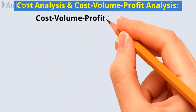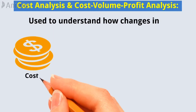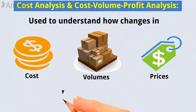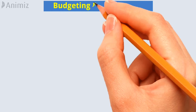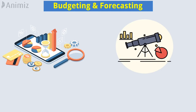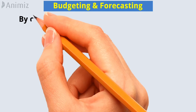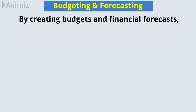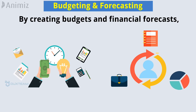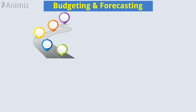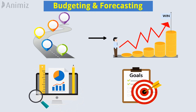Cost-Volume Profit, or CVP Analysis, is a powerful tool used to understand how changes in costs, volumes, and prices impact profitability. Number 2: Budgeting and Forecasting. Budgeting and forecasting are essential components of managerial accounting. By creating budgets and financial forecasts, managerial accountants enable managers to plan and allocate resources effectively. These tools provide a roadmap for achieving financial goals and help measure actual performance against set targets.